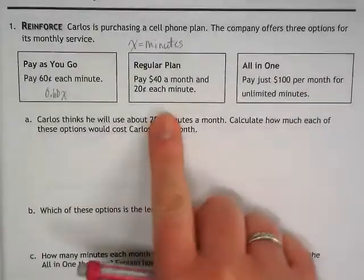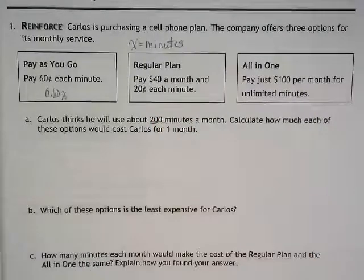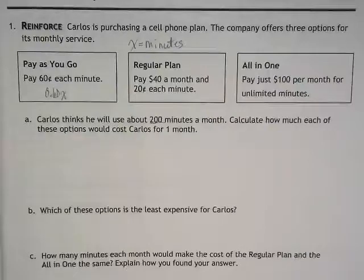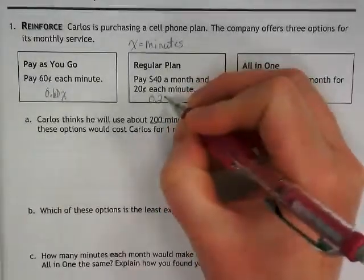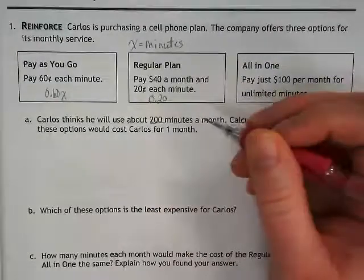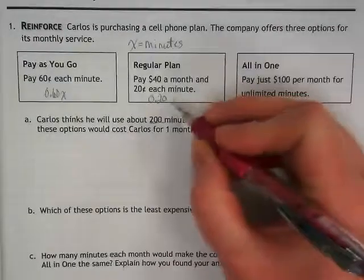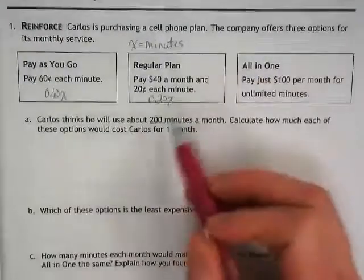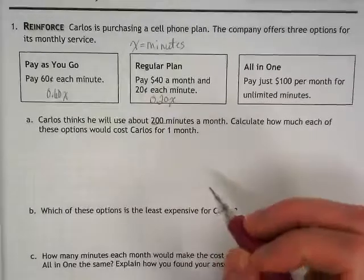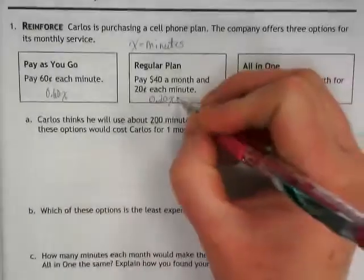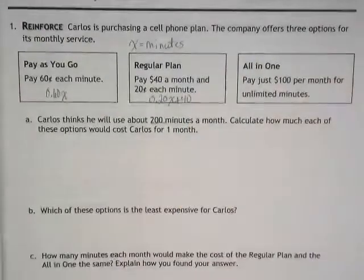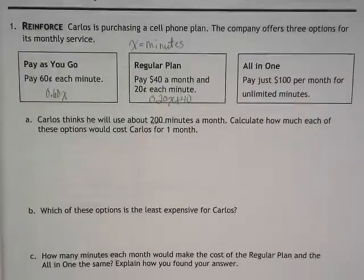How would we write an expression for the middle one? It would be 0.20x plus 40 — so 20 cents per minute plus the $40 monthly fee. And then the last one, you're paying $100 no matter what the minutes are.